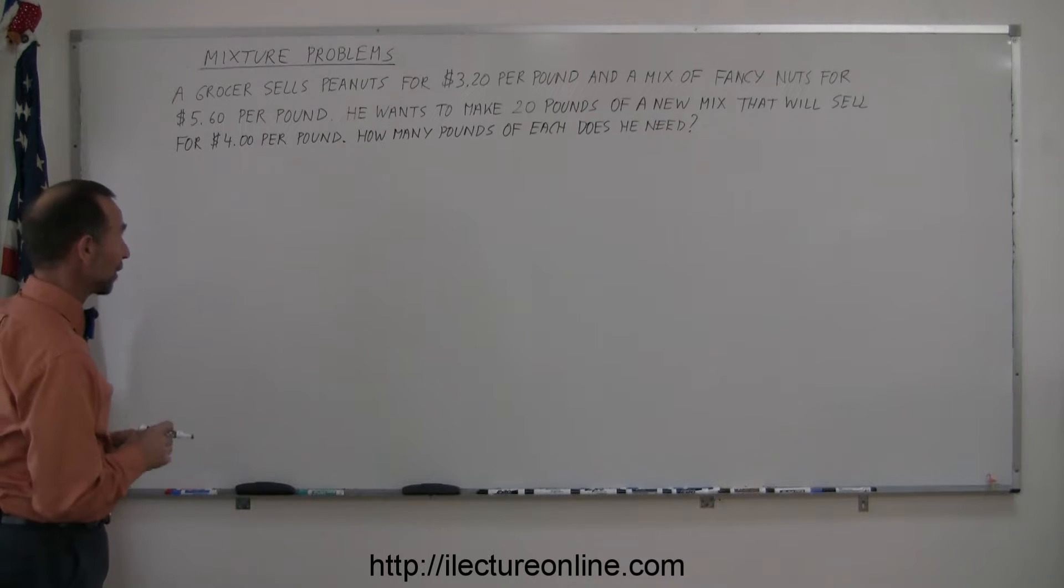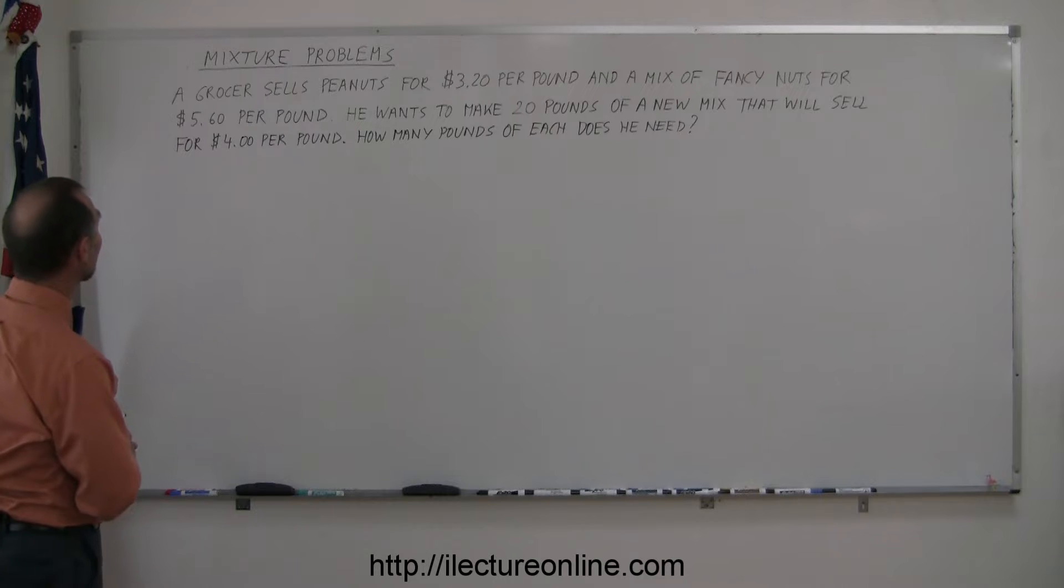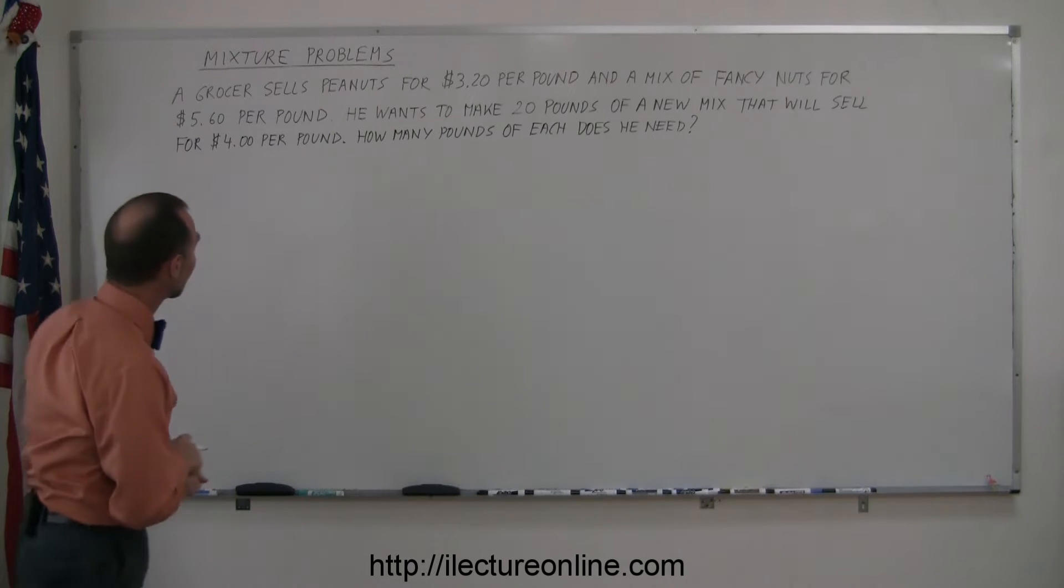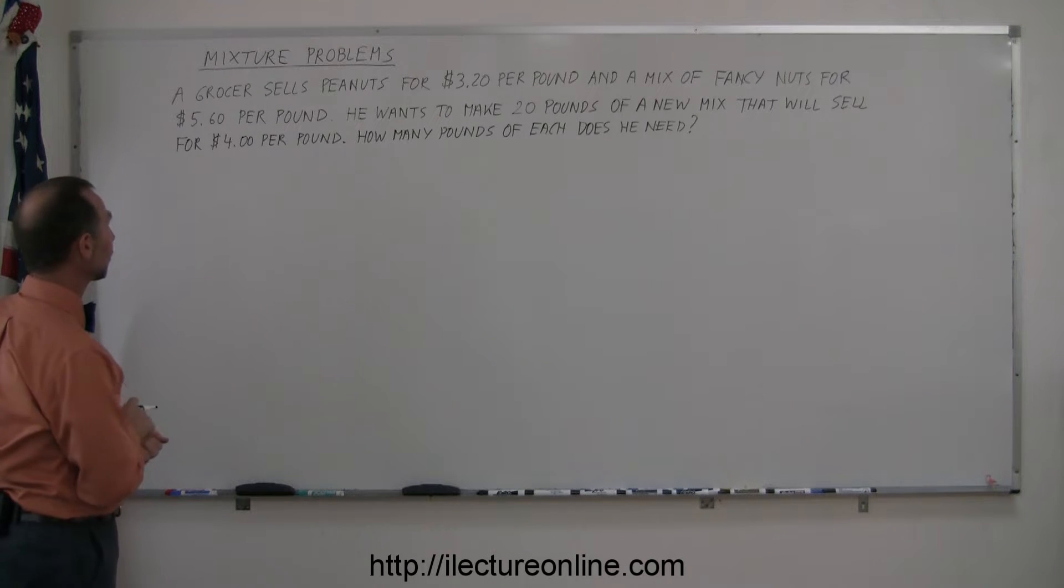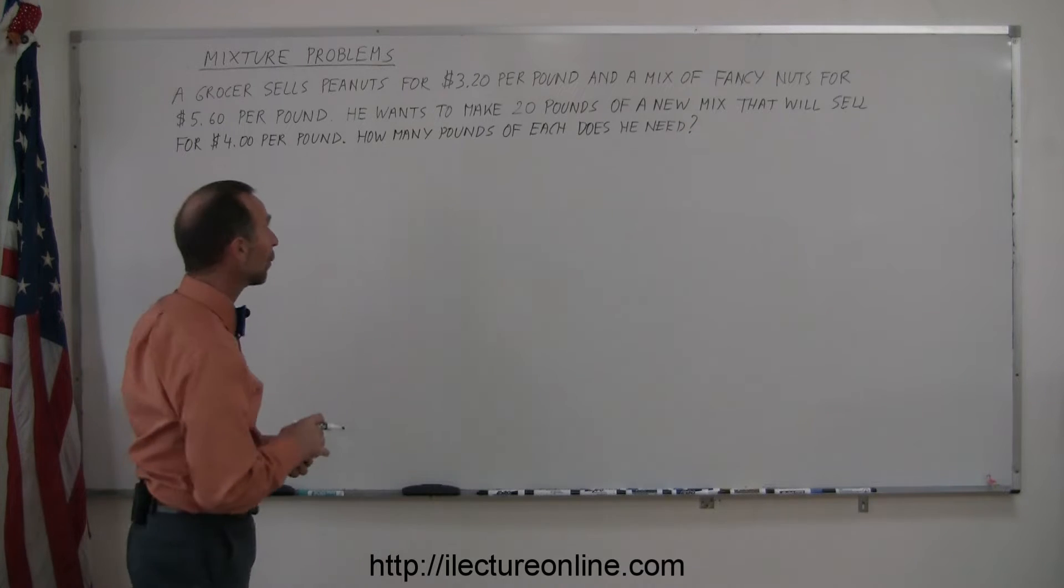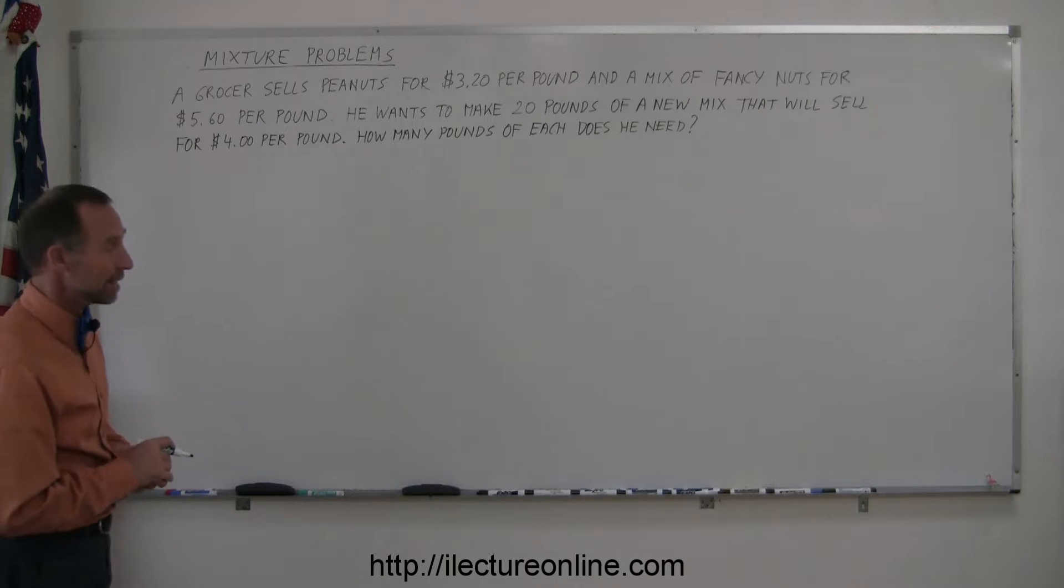Another example of how you solve mixture problems in algebra. Let's take a look at this one. A grocer sells peanuts for $3.20 a pound and a mix of fancy nuts for $5.60 per pound. He wants to make 20 pounds of a new mix that will sell for $4 per pound. How many pounds of each does he need?